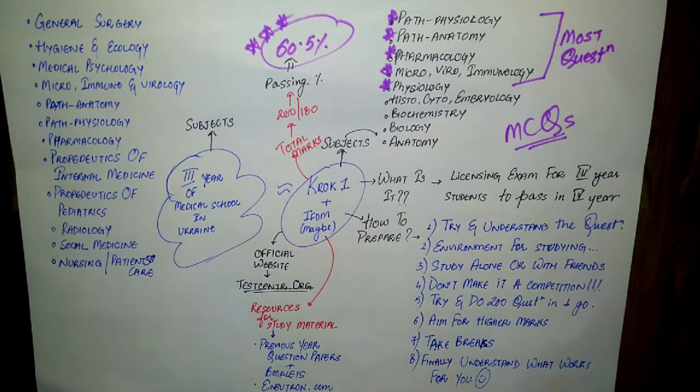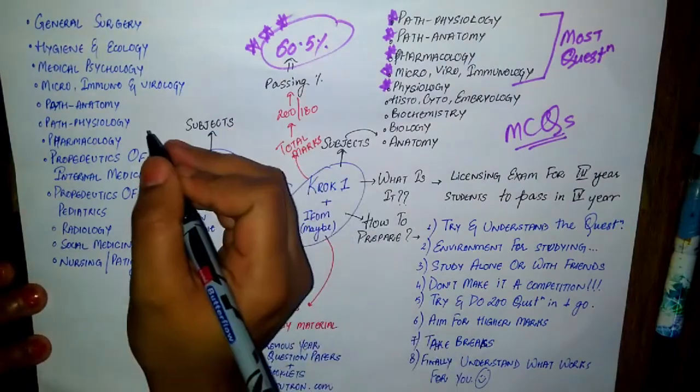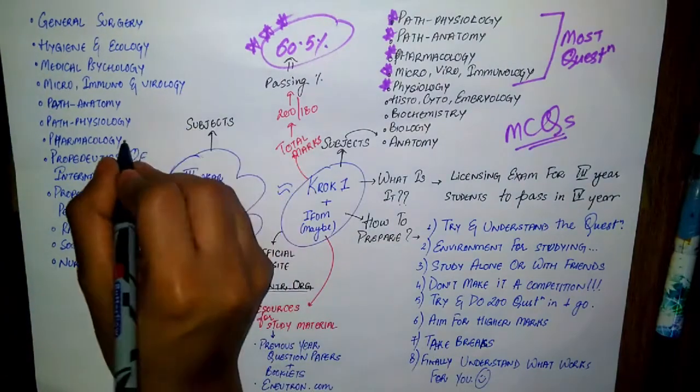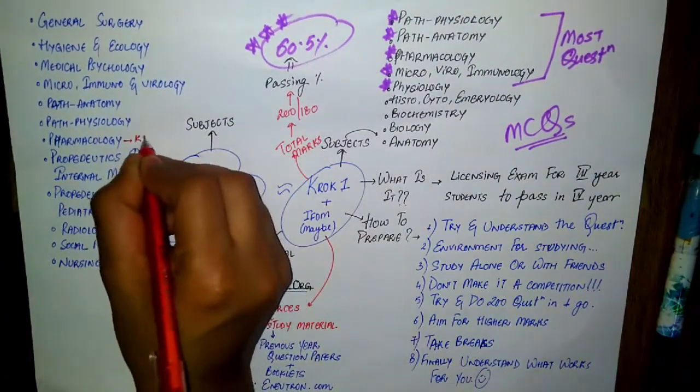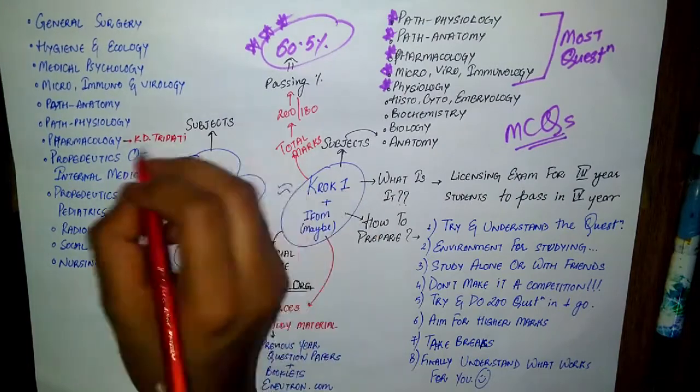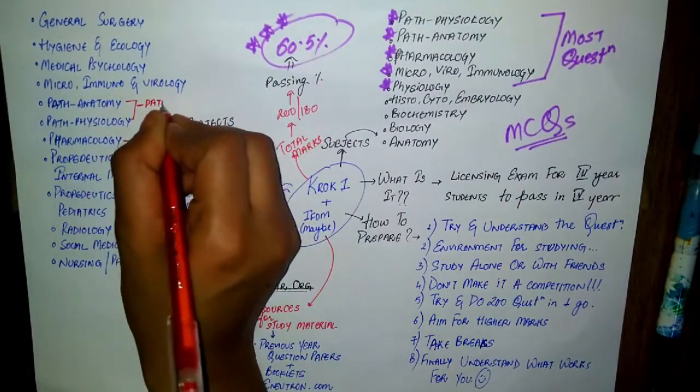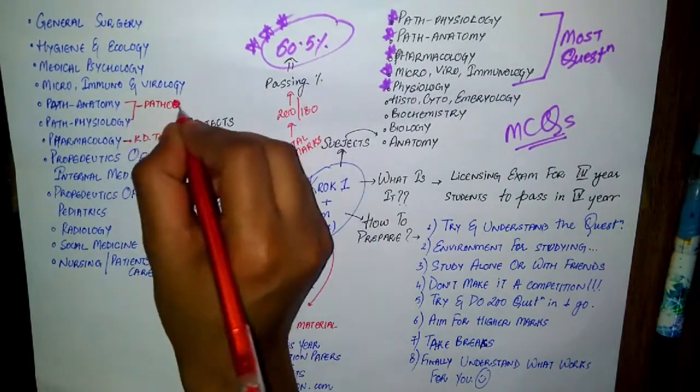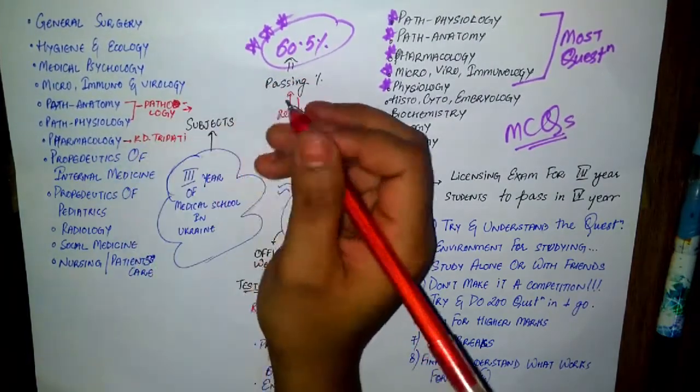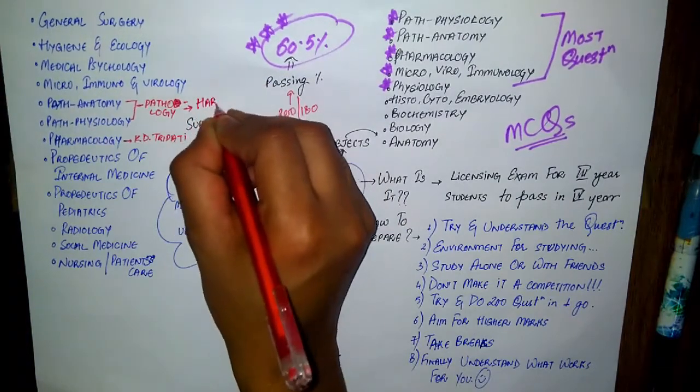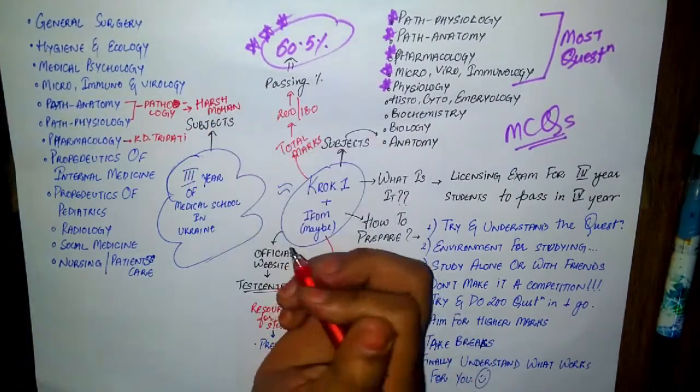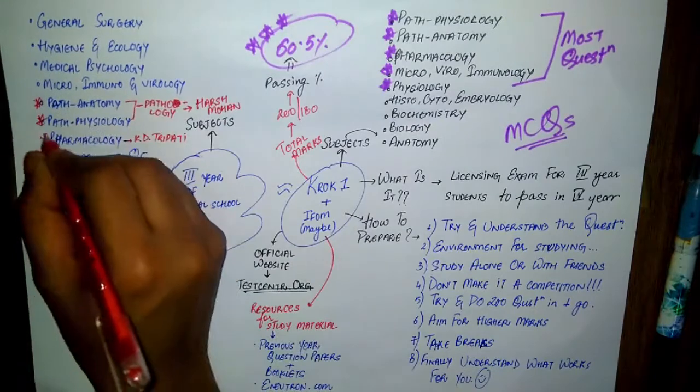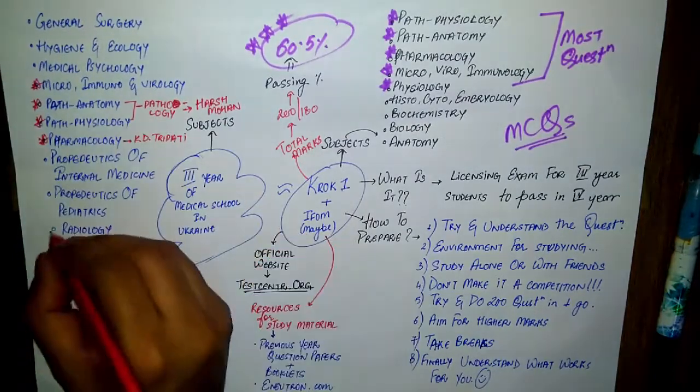Since in third year CROC is the most important, for the important subjects the teacher will provide you with books which will have MCQs. If you want to study some subjects well, I can recommend KD Tripathi's book for pharmacology and Harsh Mohan's book for pathology. These are both by Indian authors and they are very good books, helpful for your future examinations as well.